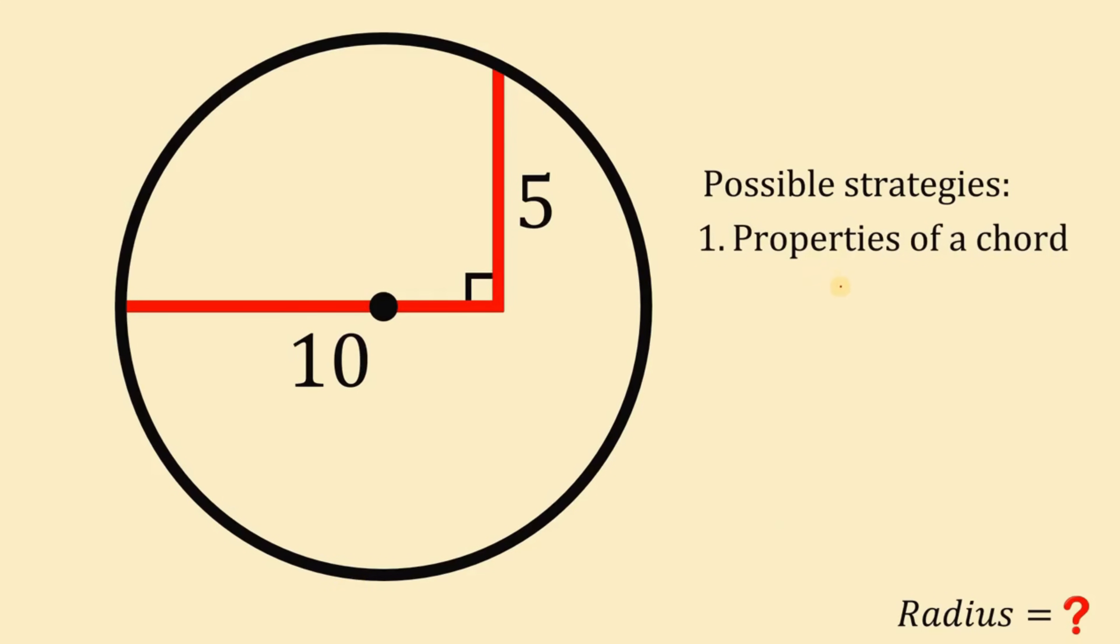And now, once we apply the properties of a chord, we will now use the power of a point or the chord-chord power theorem. Now the second method is of course our favorite, the Pythagorean theorem.